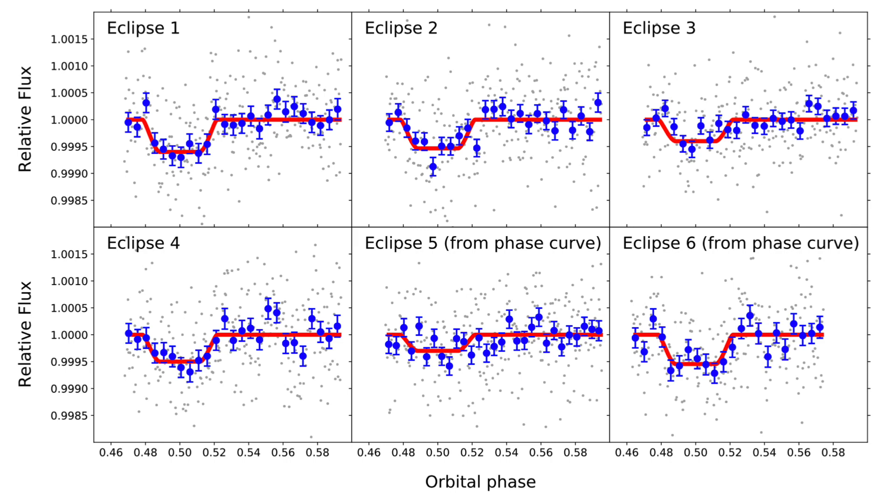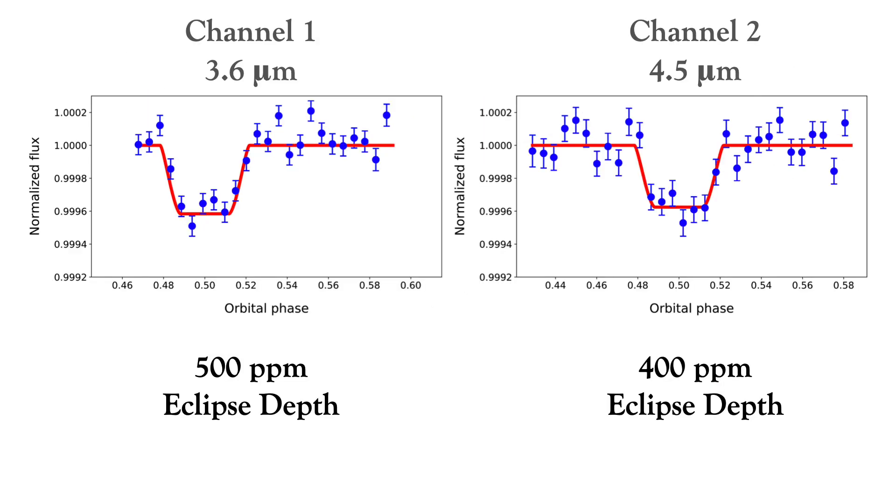Here we can see some examples of the eclipse measurements from Spitzer at 3.6 microns, where the grey dots are the original measurements, the blue data points with error bars are those measurements combined together to increase the signal-to-noise ratio, and the red curve is the best fit eclipse model that provides the properties of the event, and therefore the characteristics of the planet. We found that the eclipse depth at this wavelength is only 500 parts per million, a very small change indeed, yet it is significantly deeper than that recorded in the longer 4.5 micron wave band, which provides a depth of only around 400 parts per million.